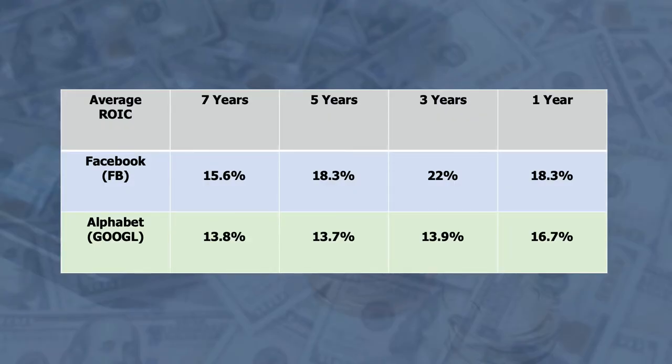Putting the table on screen to compare Facebook and Google side by side: Facebook outperforms in every metric — seven-year average 15.6% vs 13.8%, five-year 18.3% vs 13.7%, three-year 22% vs 13.9%, and last year 18.3% vs 16.7%. This suggests Facebook is the better-performing company, but nothing is ever that simple — we also need to consider current price, margin of safety, and projected future growth rates.